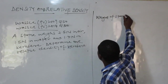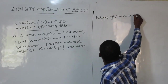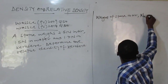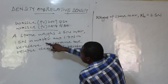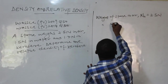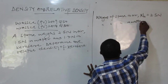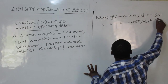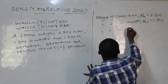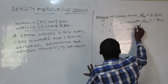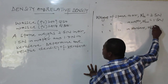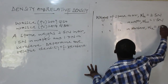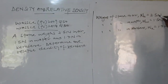The weight of the stone in air — we call it W_A — is 2.5 Newtons. The weight in water — W_W — is 1.5 Newtons. The weight in the liquid, which in this question happens to be kerosene — W_K — is 1.7 Newtons. So you can see: in water it is 1.5 and in kerosene it is 1.7.